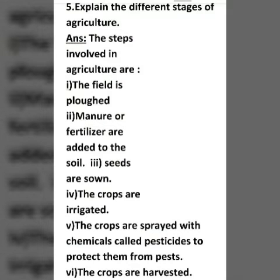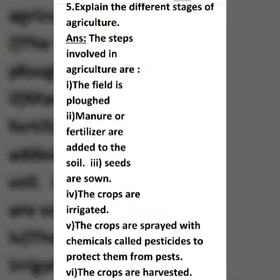1st: The field is ploughed. 2nd: Manure or fertilizer are added to the soil. 3rd: Seeds are sown. 4th: The crops are irrigated. 5th: The crops are sprayed with chemicals called pesticides to protect them from pests. 6th: The crops are harvested.